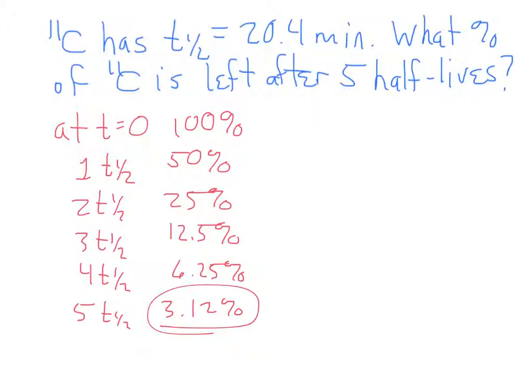Now that's kind of the brute force way of doing that. There's an easier way, especially if I don't want to tell you five half-lives, but maybe 3.3 half-lives. The mathematical way of doing it is the percent remaining is 0.5 to the y power, where y is the number of half-lives.